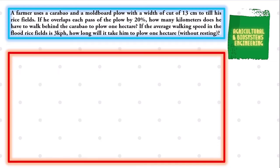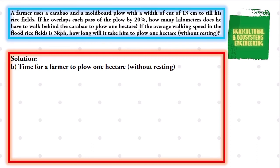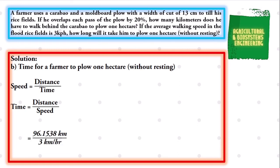Next, we solve for the time for a farmer to plow one hectare without resting. To solve for that, we will be using the formula: speed is equal to distance over time. Since we are solving for time, we derive the equation and obtain: time is equal to distance over speed. We substitute the values and we have: time is equal to 96.1538 kilometers over 3 kilometers per hour. We get the quotient and we have a final answer of 32.0513 hours.